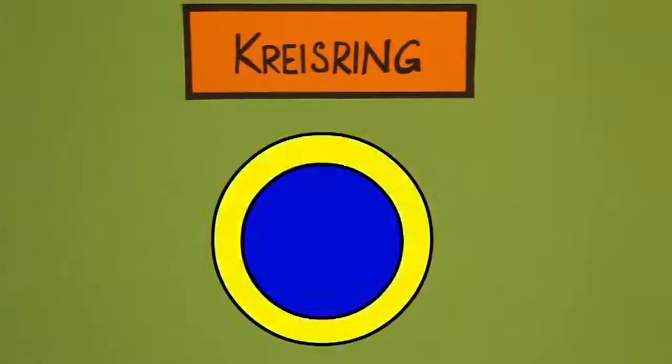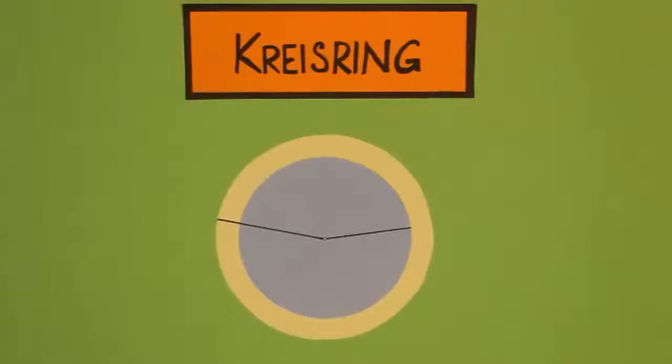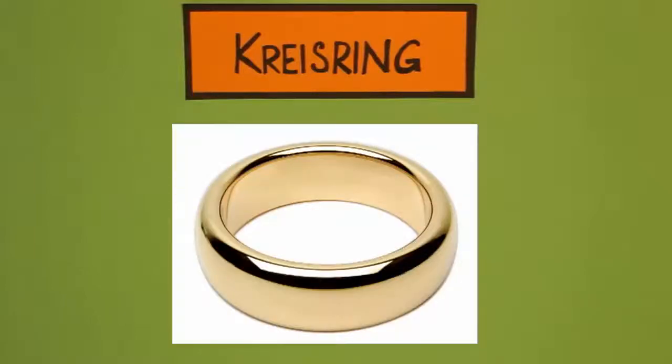Wobei der Kreisring jetzt da nur diese gelbe Fläche ist. Also die, die quasi über den blauen kleineren Kreis hinausgeht. Und diese gelbe Fläche erinnert natürlich auch an einen Ring. Und daher kommt auch die Bezeichnung Kreisring.